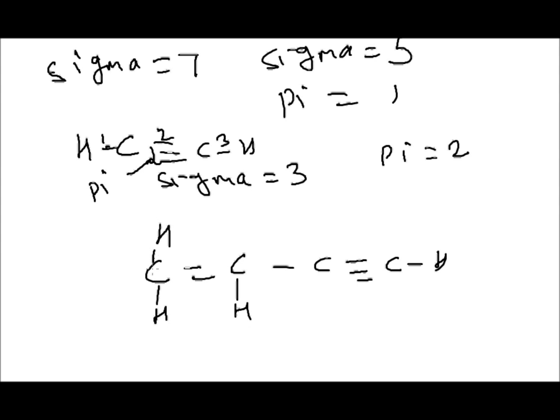So total number of sigma bonds is 1, 2, 3, 4, 5, 6, 7. Now pi bond is equal to 1, 2, 3.